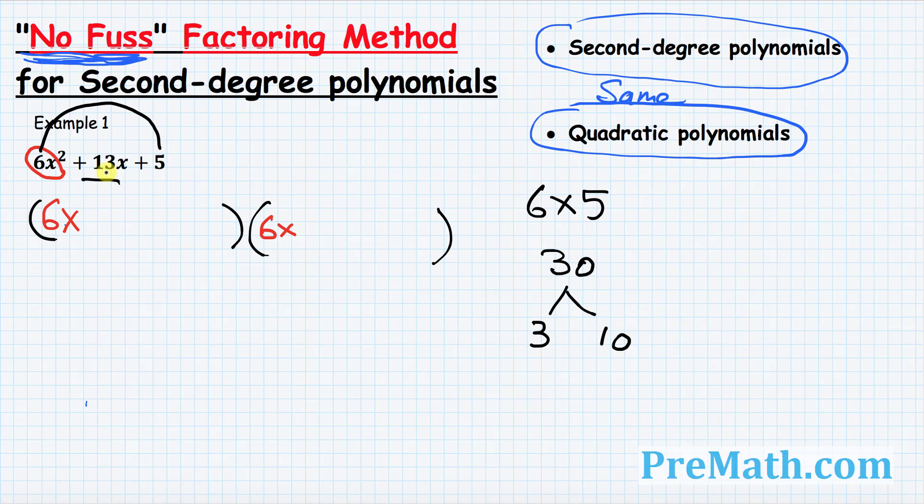If we add them, that's going to give us positive 13. Since there is a plus sign, so we are going to stick a plus sign with both of these numbers. So we got positive 3 and positive 10. Let's go ahead and put down positive 3 in the first parenthesis and put down positive 10 in the second parenthesis.